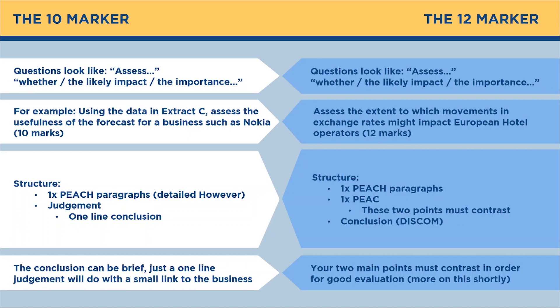12 markers require a bit more. They have one PEACH paragraph and then another one, and those two points must contrast. When I show you the table about how you can contrast your 12 mark paragraphs, that will make much more sense. Effectively you need two PEACH paragraphs, but only one of them needs to have a 'however,' and that will be the first one. Then for your conclusion, the way I get my students to do it is a DISCO M conclusion. The key thing is that your two main points must contrast in order for you to get good evaluation.